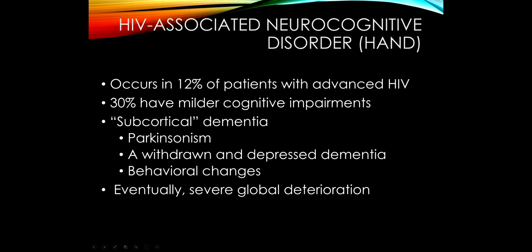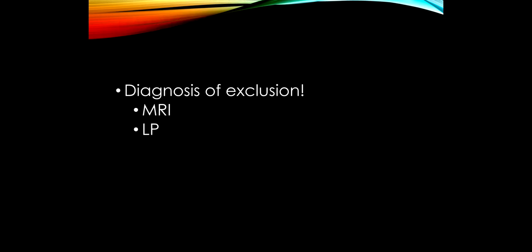Whenever we see someone who is HIV positive having memory loss, it always calls for a big workup because there could very likely be something infectious-related that could be treatable. HIV-associated dementia is a diagnosis of exclusion. You're always going to do an MRI scan and a lumbar puncture, hoping to find something treatable.